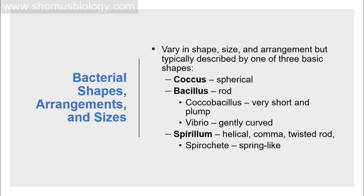Generally, based on the shape of bacteria, it can be either spherical — we call it coccus — or it can be rod-shaped — we call them bacillus. There are also coccobacilli, which are very short and plump shapes, neither fully round nor a complete rod, somewhere in the middle. Then there are vibrios, which are a kind of curved bacillus.